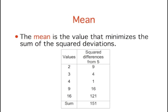The mean is the value that minimizes the sum of the squared differences. Here, you can see that the sum of the squared differences from 5 is 151. For example, the difference between the first value of 2 and 5 is 3. Square 3 and you get 9, which is shown in the second column. The sum of square differences from the mean of 6.8 is only 134.8.